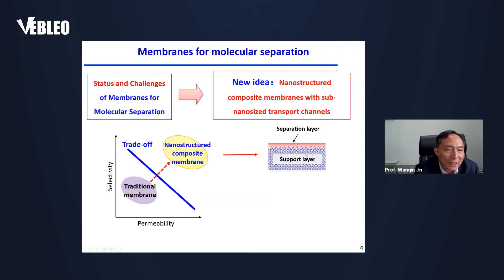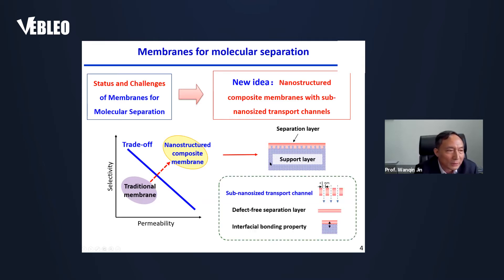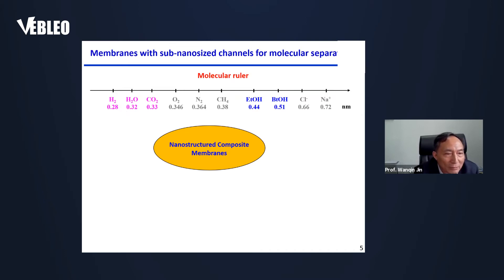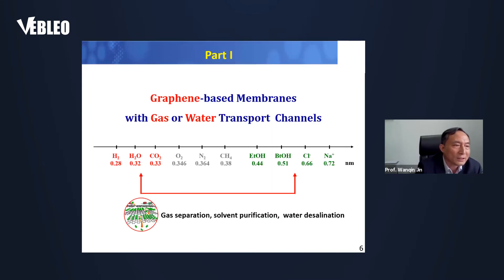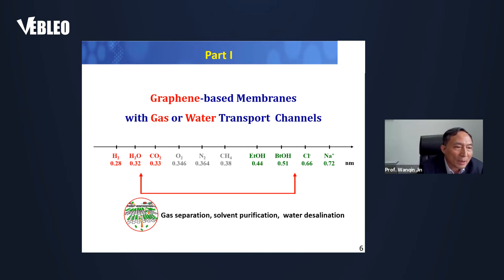To address this issue, it is promising to design and fabricate nanostructured composite membranes with sub-nanometer-sized transport channels. Three aspects should be considered: the sub-nanometer-sized transport channel, the defect-free separation layer, and the interfacial bonding property. Today, I will introduce two kinds of membranes with sub-nanometer-sized channels developed by our group — graphene-based membranes for gas and water transport, and inorganic composite membranes for solvent transport.